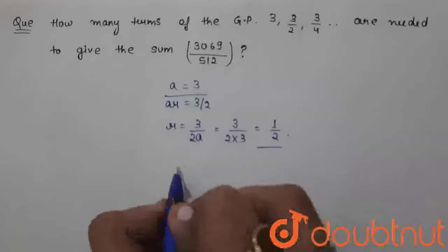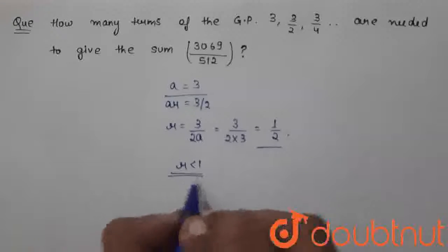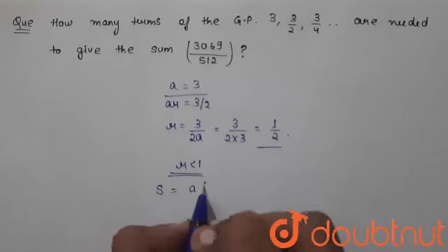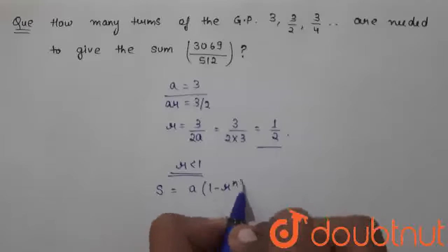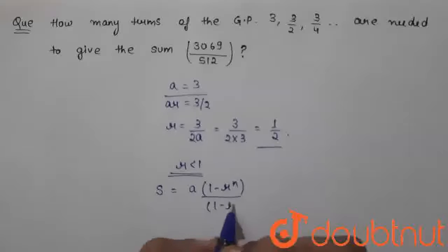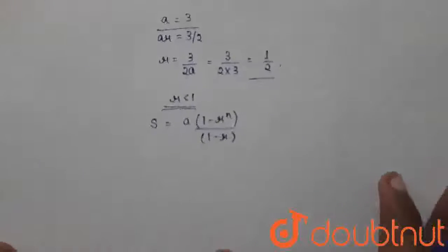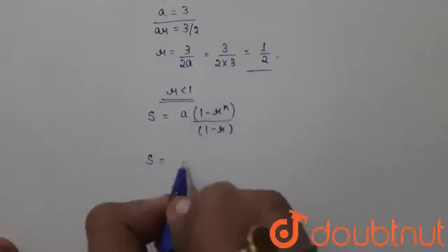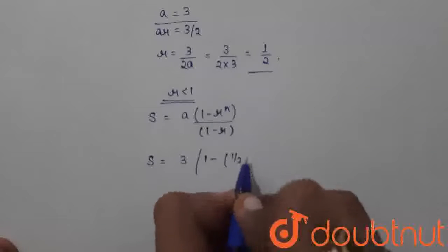We can clearly see that r is less than 1. So for r less than 1, the sum of the GP is a times (1 minus r^n) divided by (1 minus r). Now in this, we will write down the value of a and r. In place of a, we will write 3. In place of r, we will write 1/2.